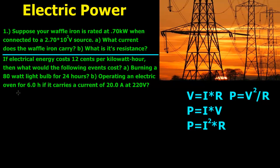So for this we know that the power of this waffle iron is going to be 0.70 kilowatts. We can rewrite that — K is 10 to the third — so moving the decimal three places gives us 700 watts. And we know it's connected to a volt source of 270 volts.